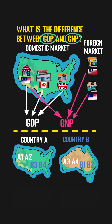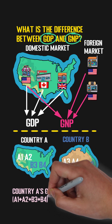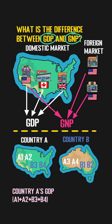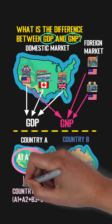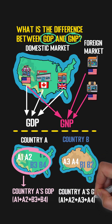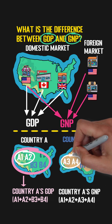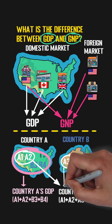Based on the definition, Country A's GDP indicates the total value produced by A1 plus A2 plus B3 plus B4, because they are all geographically in Country A. In comparison, Country A's GNP indicates the total value produced by A1 plus A2 plus A3 plus A4, because they are companies that belong to Country A.